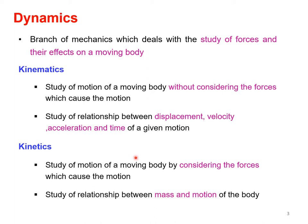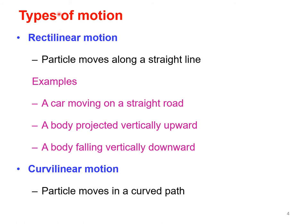In Unit 5 we are going to discuss both kinematics and kinetics. Here in this particular lecture we focus on kinematics and particularly rectilinear motion of particles. There are two types of motion: rectilinear motion, where the particle moves along a straight line (examples: a car on a straight road, a body projected vertically upward, a body falling vertically downward), and curvilinear motion, where the particle takes a curved path.